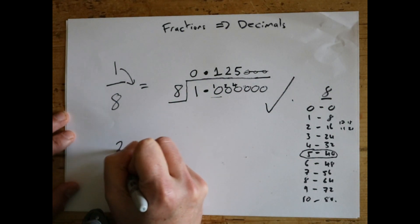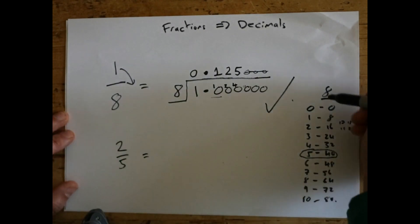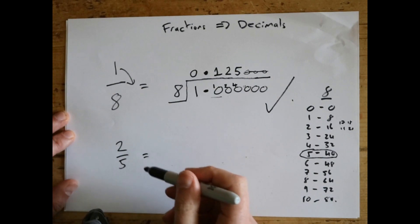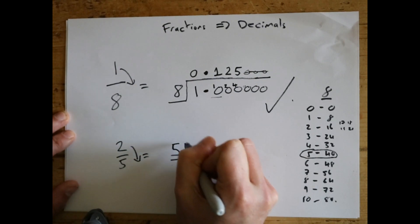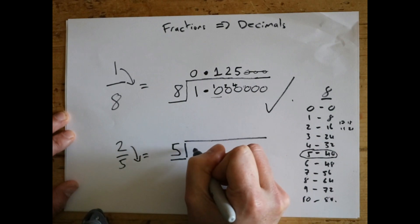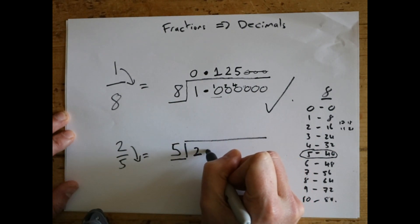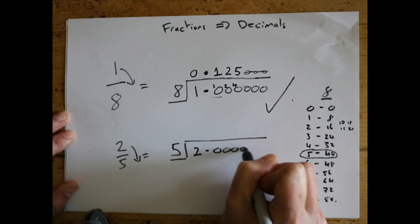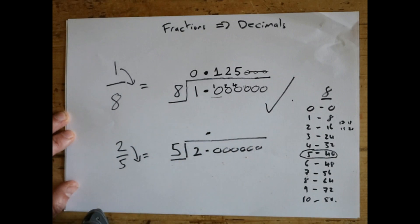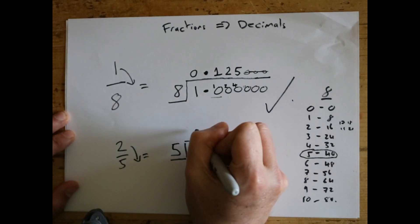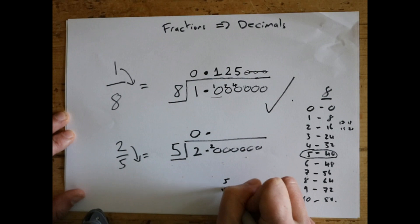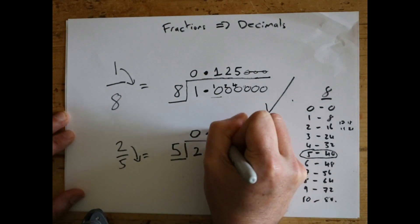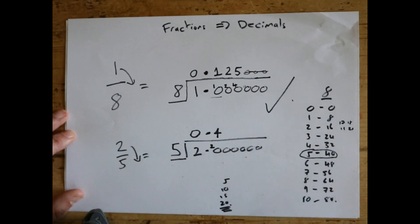To quickly review the method again: if we had two fifths, it's a five times table which hopefully you've all got off by heart. We knock the two over, so we're doing five on the left-hand side with two on the right. We put a decimal point and lots of zeros, then put the decimal point at the top. Five into two doesn't go — no times — but we've got two left over. Five into twenty: five, ten, fifteen, twenty — four times exactly. So two fifths equals 0.4.